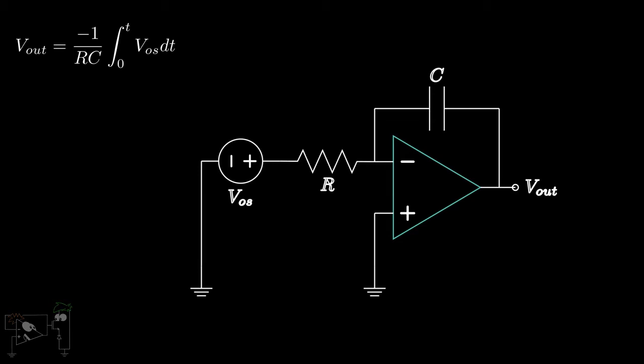Note that the input offset voltage is a DC quantity. Hence, this constant DC voltage gets integrated which results in the output tending to plus infinity or minus infinity. As Vout approaches the positive or negative saturation voltage, the output saturates. After this point, the op-amp no longer acts as an integrator.